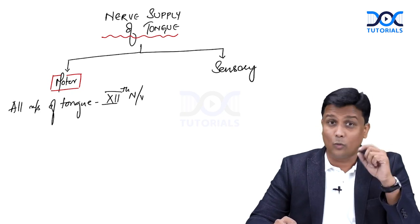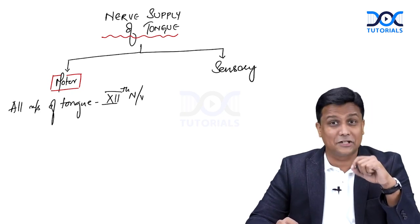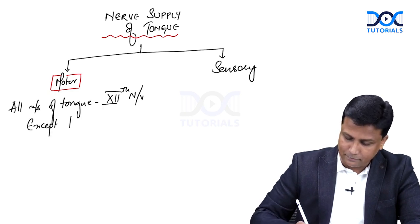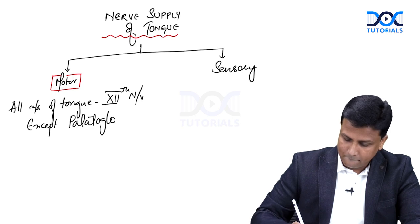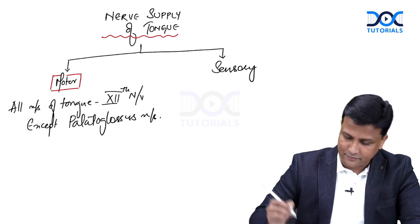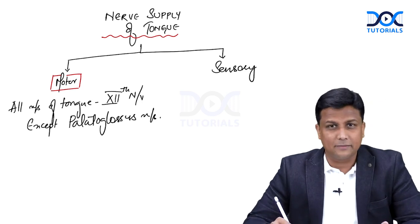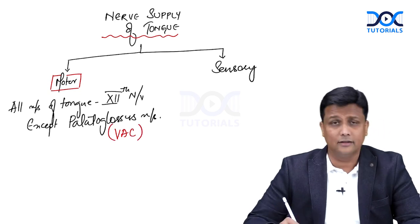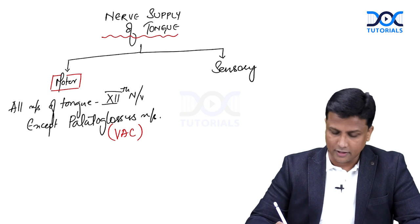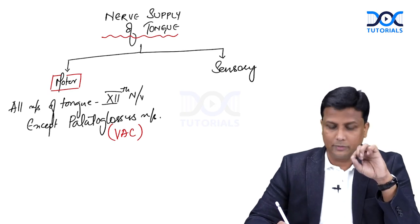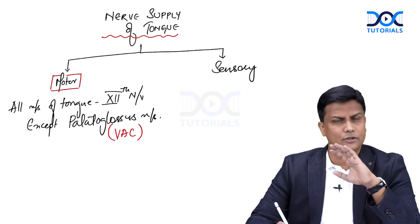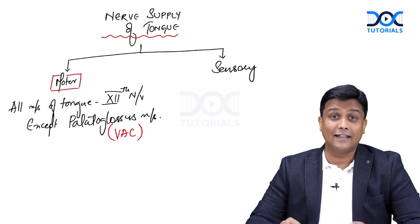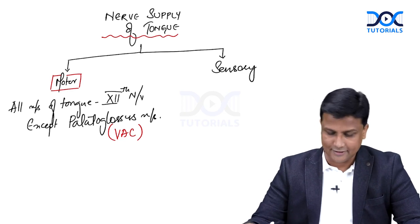Write that down and remember the exception, because simple things are never asked in exams — the exception is. All muscles are supplied by the twelfth nerve except the palatoglossus muscle, which is not a true muscle of the tongue. Palatoglossus is supplied by the vago-accessory complex, also known as the pharyngeal plexus. So all muscles of tongue are supplied by the hypoglossal nerve except palatoglossus, which is supplied by the vago-accessory complex.